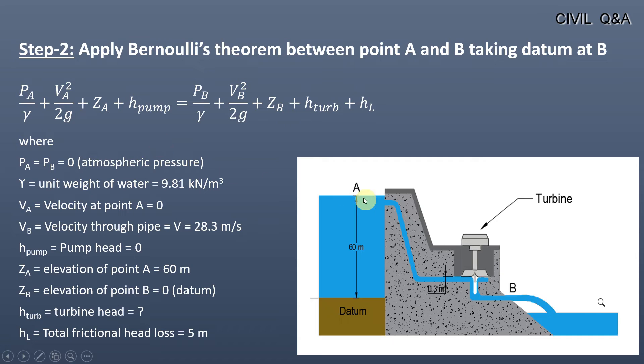As we see, point A and point B are open to the atmosphere, so the pressure at these two points will be equal to zero or the atmospheric pressure. The unit weight of water is equal to 9.81 kilonewton per meter cube.